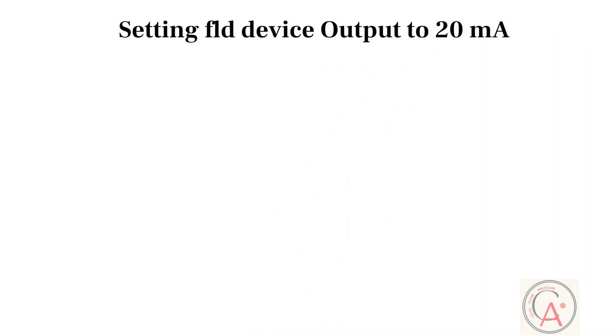Setting field device output to 20 milliampere's message will appear on the screen. Press ENTER button to select this option.